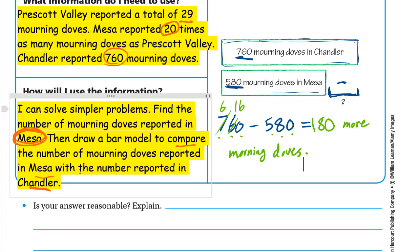Is the answer reasonable? If we round 760 to the nearest hundred it's 800, and rounding 580 is 600. 800 minus 600 equals 200, and our answer of 180 is very close to 200, so yes, the answer is reasonable.